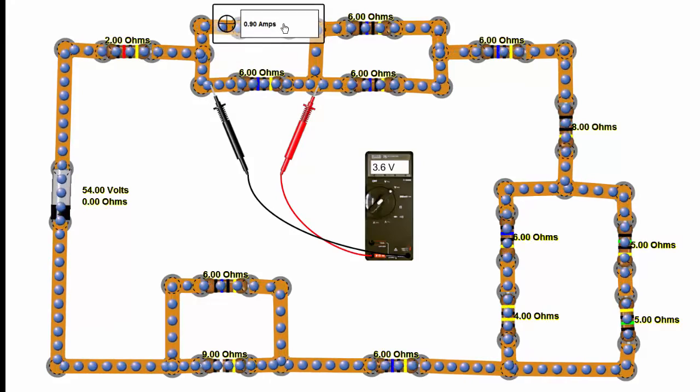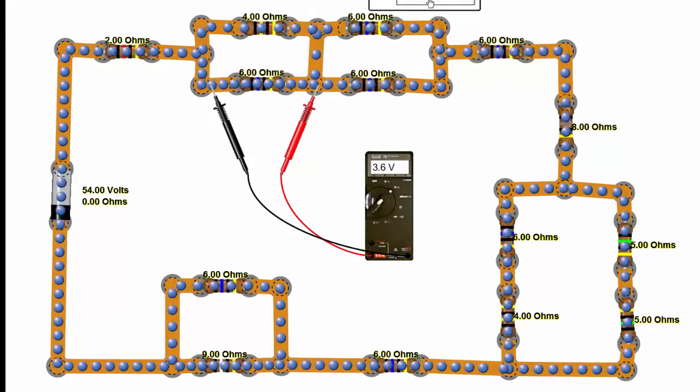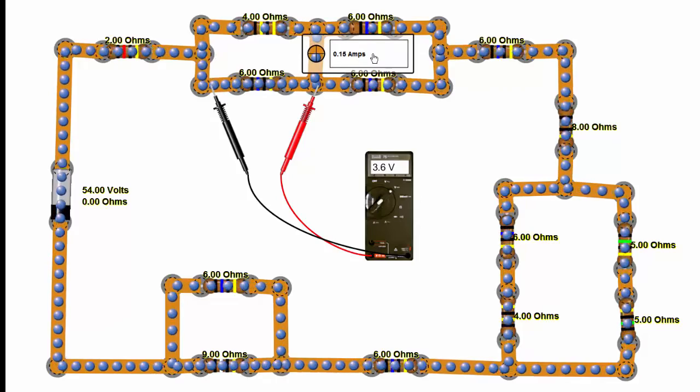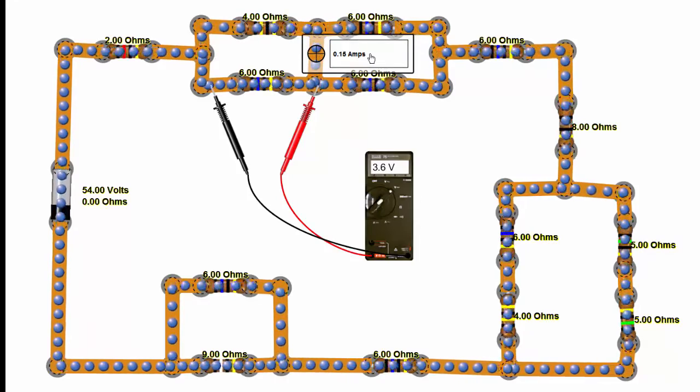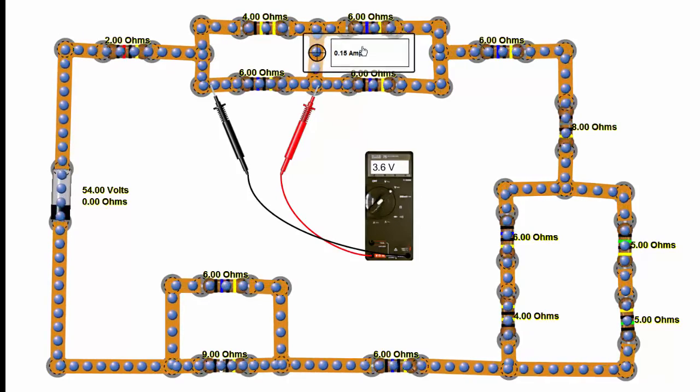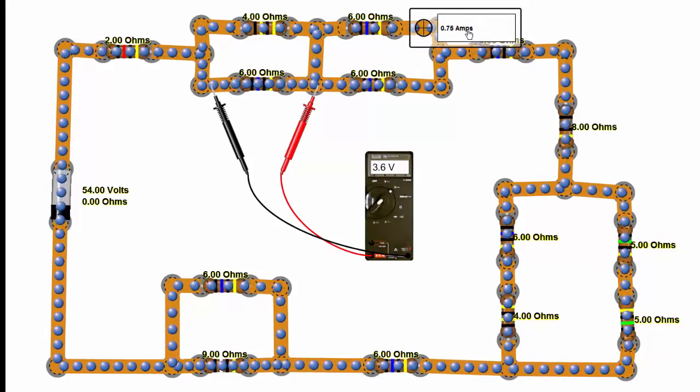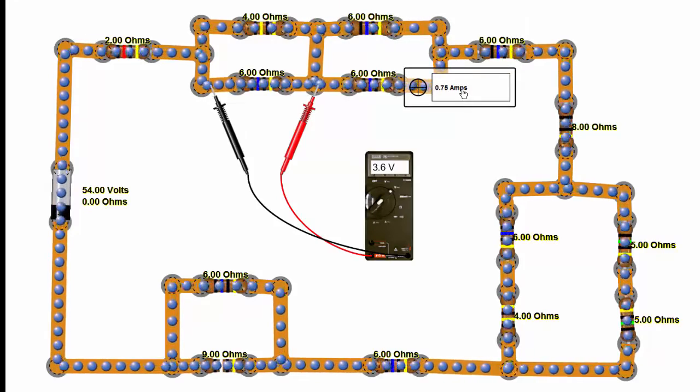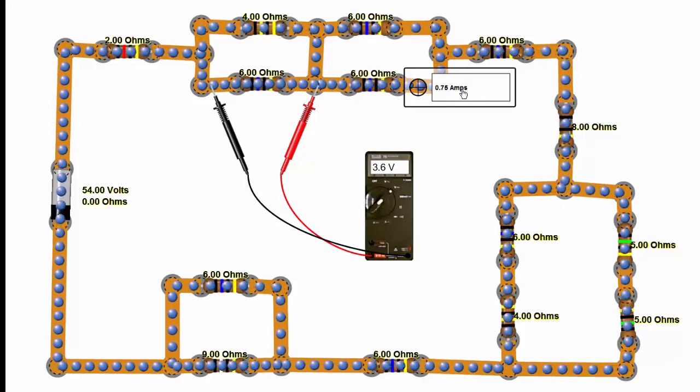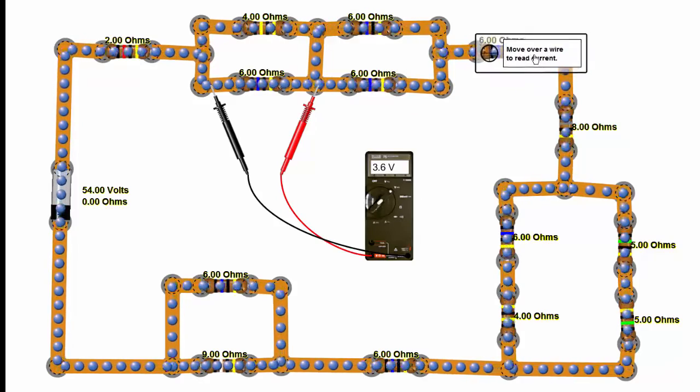If we look at other places in the circuit, like here, we get 0.75 and 0.75, which is the sum of 1.5. Here the current converges back to 1.5 again.